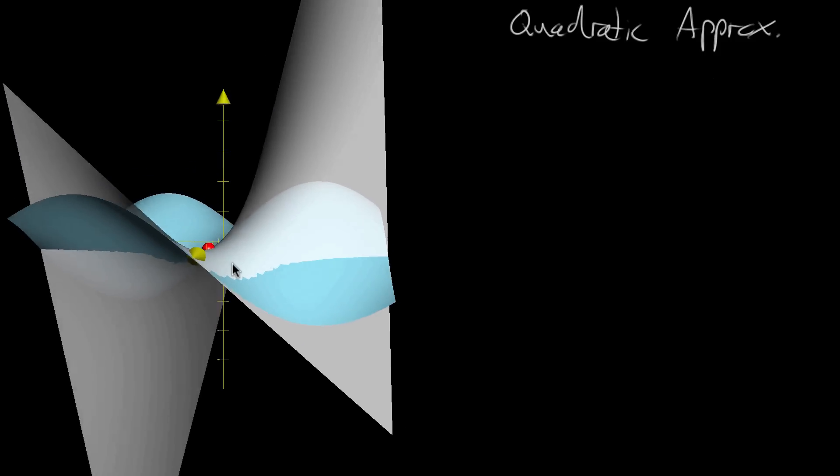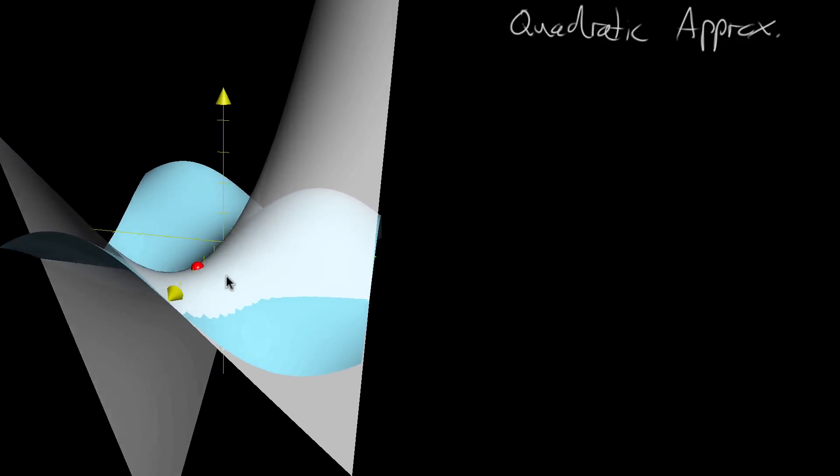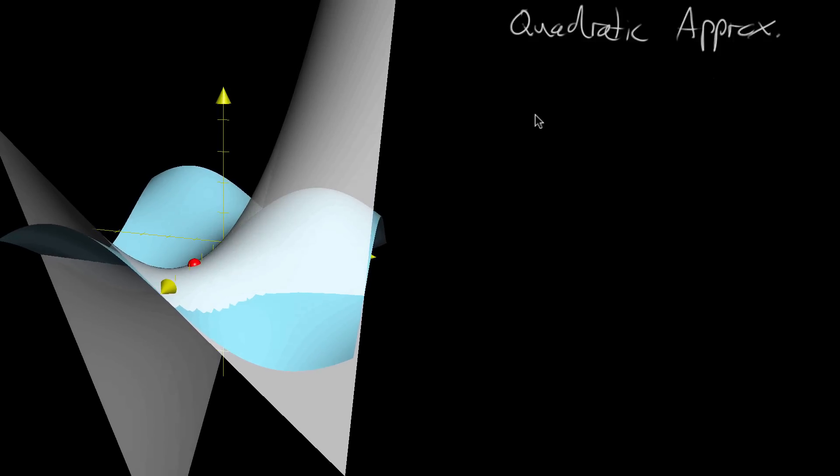So this is going to be something that, although it takes more information to describe than a local linearization, it gives us a much closer approximation.